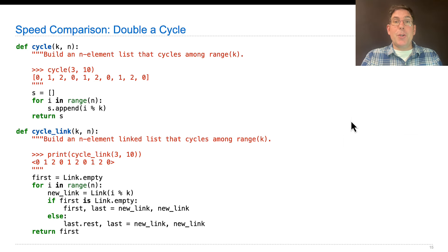In order to figure out which one's faster, we need a big long list to call double long. So here's an example long list, cycle, which builds an n-element list that cycles among range k. For k equals 3, that's 0, 1, 2, 0, 1, 2, 0, 1, 2, 10 elements, but I could also have 1,000 elements that's just cycling from 0 to 1 to 2 to 0.